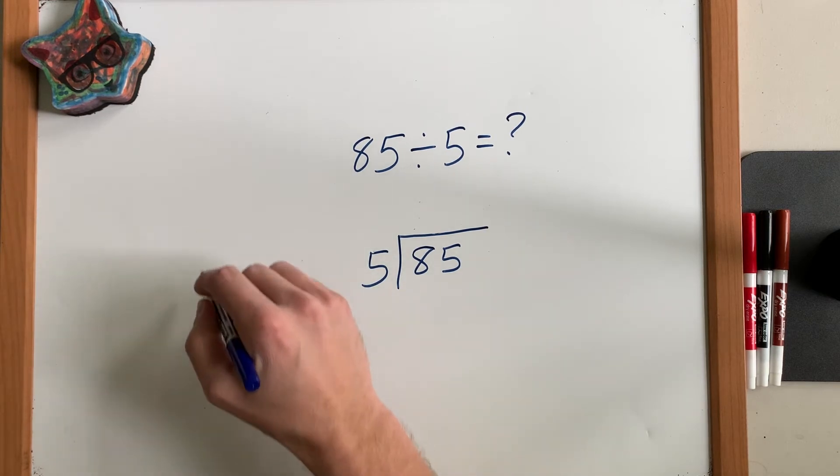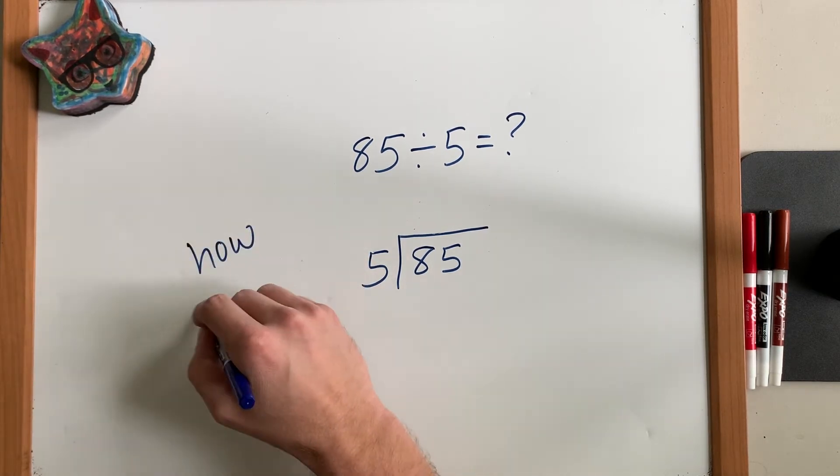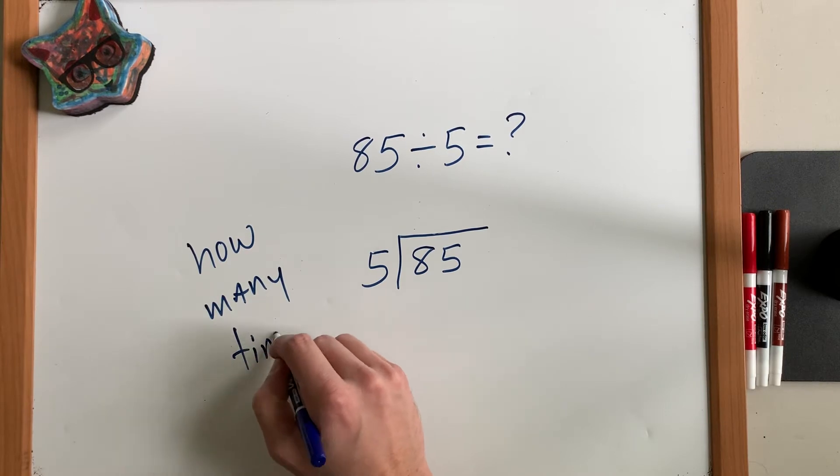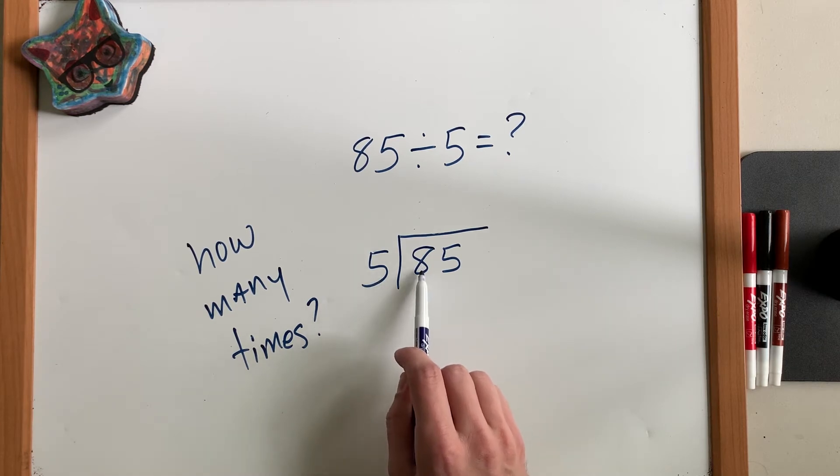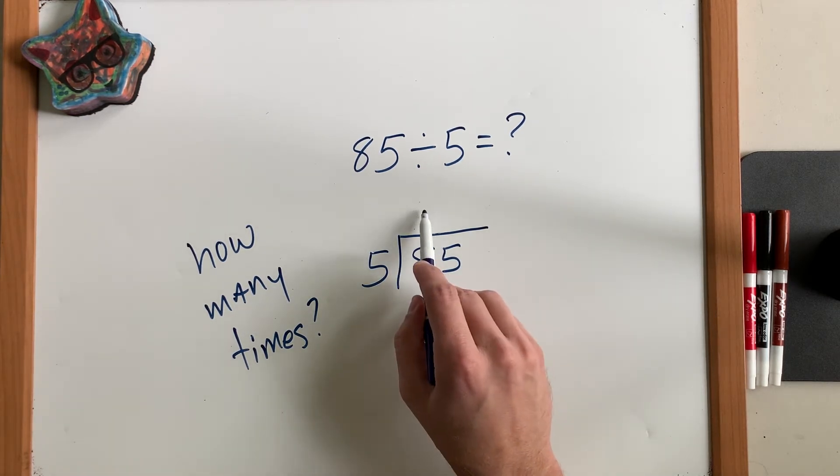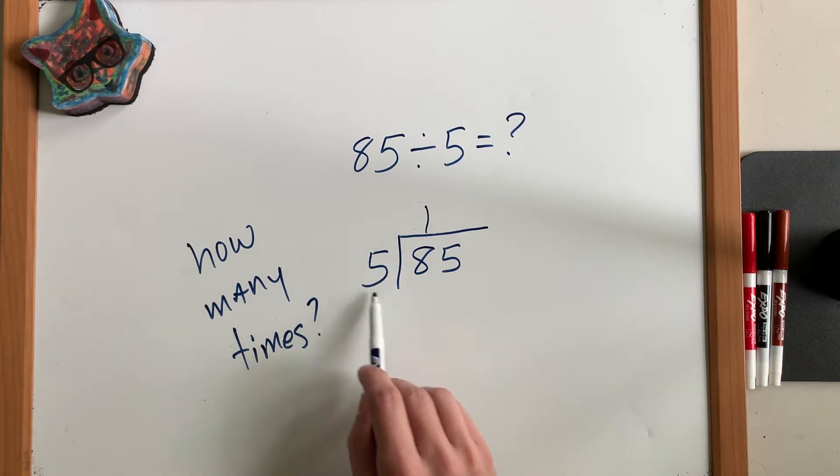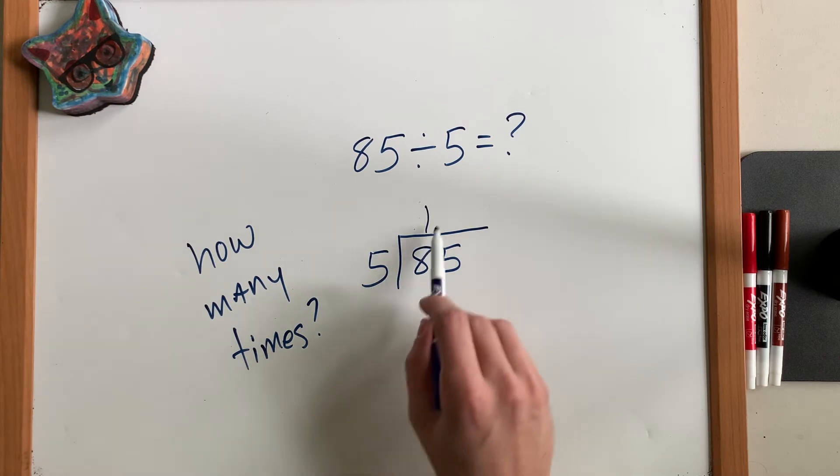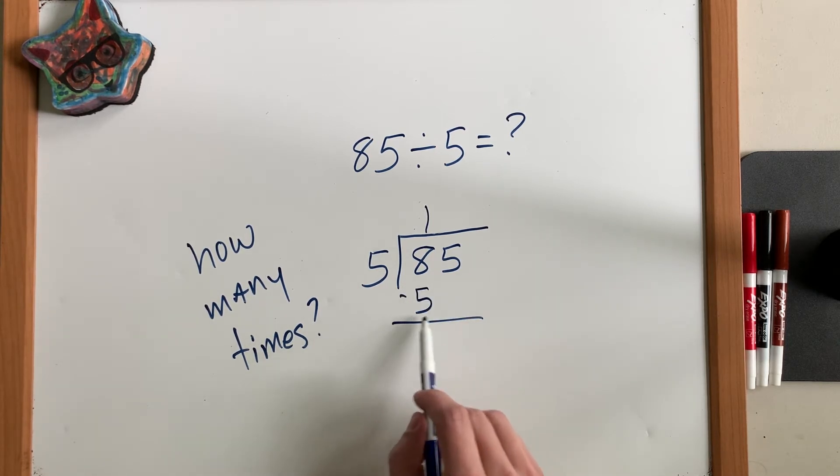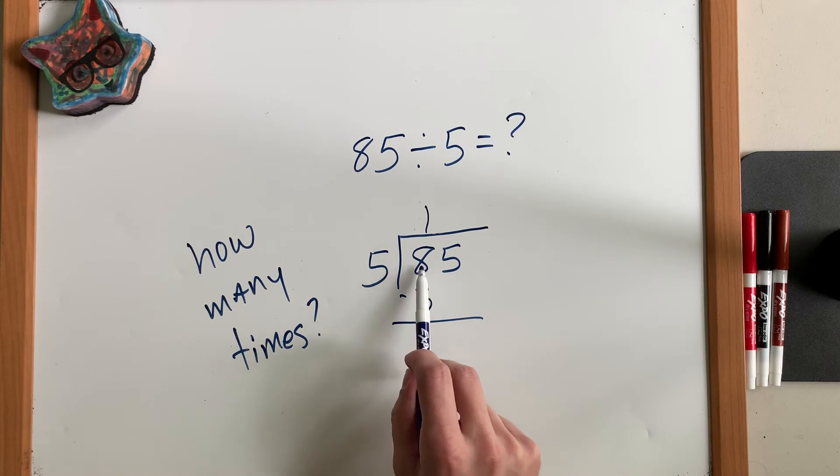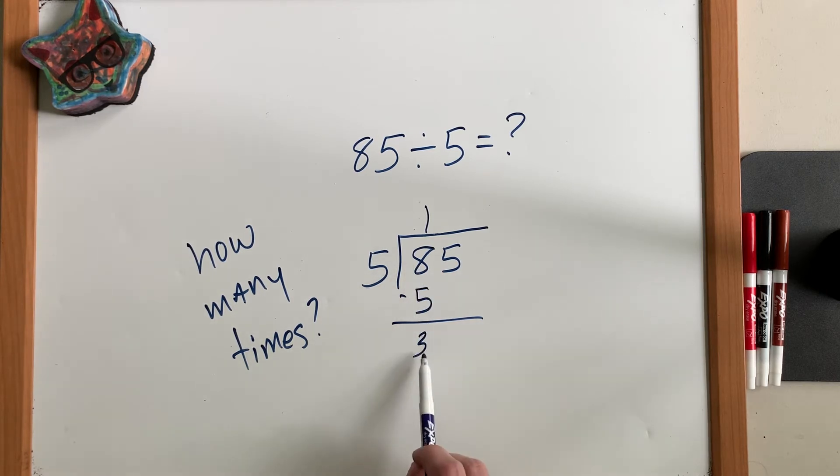And what we're going to ask ourselves is the question, how many times? We're going to use this a lot. And what we're going to do is say, how many times does 5 fit into 8? It fits in once because two 5s would be 10 and that's too much. But one 5 can fit in there. Now I multiply these and I say that one 5 can fit into 8, and that would be 5. And now if I subtract these, I have 3 left over. So what I'm saying here is that a 5 can fit into 8 and then there would be 3 parts left over.